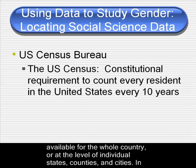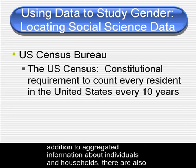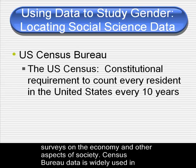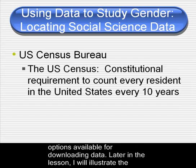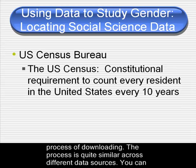Such data is available for the whole country or at the level of individual states, counties, and cities. In addition to aggregated information about individuals and households, there are also surveys on the economy and other aspects of society. Census Bureau data is widely used in studies concerning gender. We'll take a brief look at the site and the variety of options available for downloading data. Later in the lesson, I will illustrate the process of downloading. The process is quite similar across different sources.